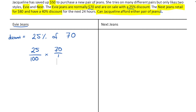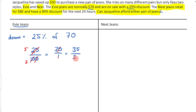You then cancel out. I could cancel a 0 and a 0. I could cancel 10 and 25, both of which are divisible by 5. This would become 2 and this would become 5. Then I multiply across: 5 times 7 is 35, and 2 times 1 is 2. So what is half of 35?